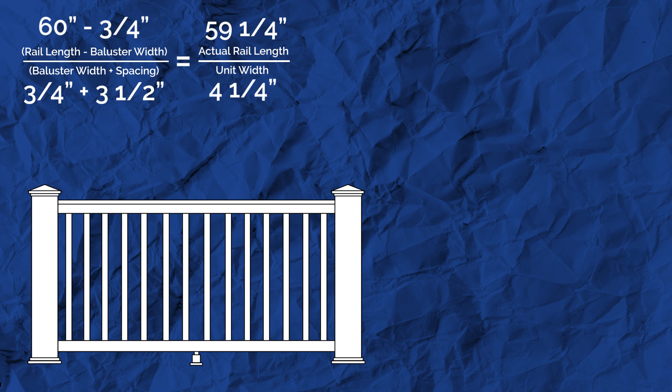The maximum open space allowed by building code is less than four inches. We chose three and a half inches for the spacing in our example because it maximizes the open space in the section and minimizes the number of balusters we'll have to install. A spacing of three and a half inches also gives us an acceptable remaining space, which we'll explain later. Use these ideas as guidelines when choosing your baluster spacing.